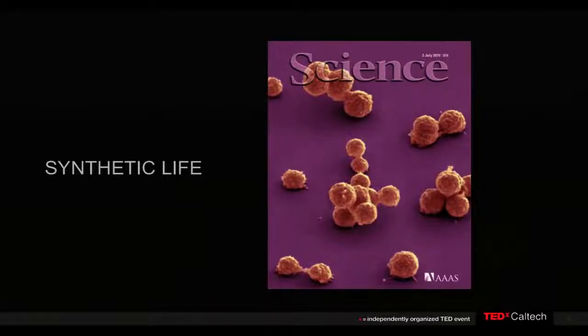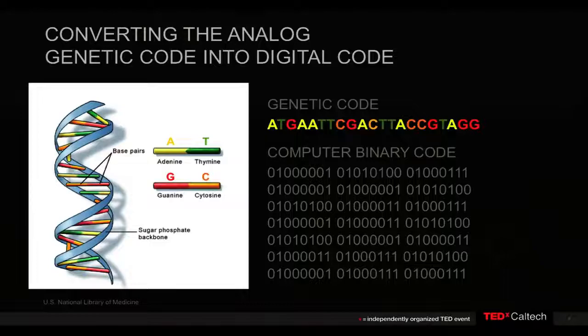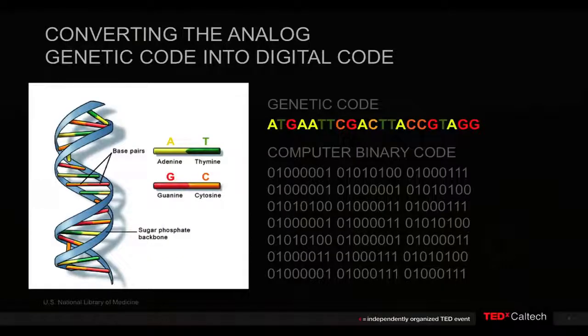How did we get here? We've had about 34 years now of reading the genetic code. When we read that genetic code, in my view, we're digitizing biology. From the first virus in 1977 to the first bacterial genome that we did in 1995, the first human genome in 2000 — all of that gets encoded into the ones and zeros in the computer.